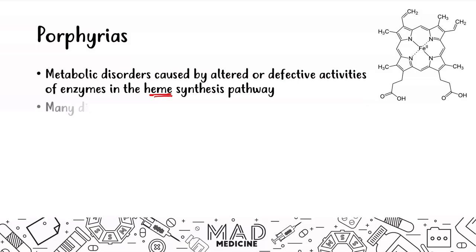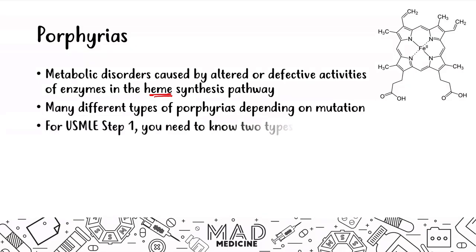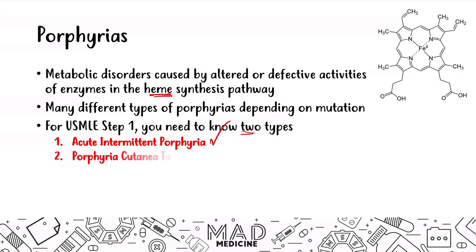There are many different types of porphyrias that depend on the mutation that occurs in the pathway. For Step 1, you only need to know two types: acute intermittent porphyria, which we've already talked about, and porphyria cutanea tarda, which we're going to be discussing today.